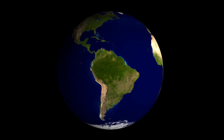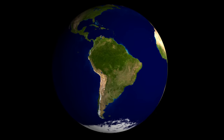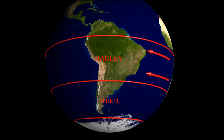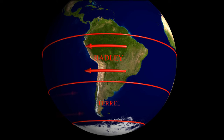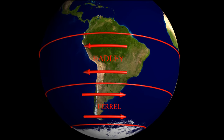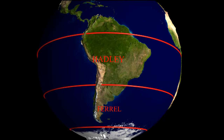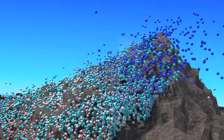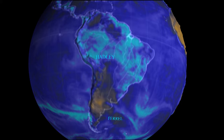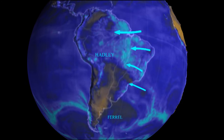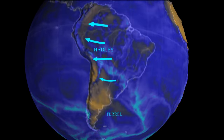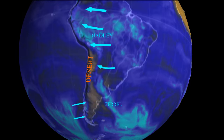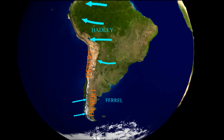Let's use the three-celled model to explain what's going on in South America. South America is covered by the Hadley Cell and the Ferrell Cell. Within the Hadley Cell, the trade winds are moving from east to west. Within the Ferrell Cell, the westerlies are moving from west to east. South America has a long mountain range called the Andes — and remember, what happens when air rises over a mountain range? It rains. Within the Hadley Cell, the air moves from east to west, so the east side gets lots of rain and the west side is a desert. Within the Ferrell Cell, the westerlies move from west to east, so the west side gets lots of rain and the east side is a desert.